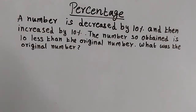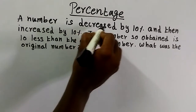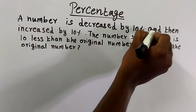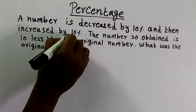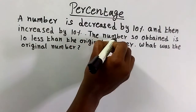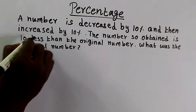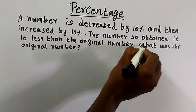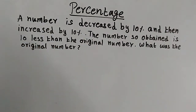Very good morning to all. Here a number is decreased by 10% and then increased by 10%. The number so obtained is 10 less than the original number. Then what was the original number?